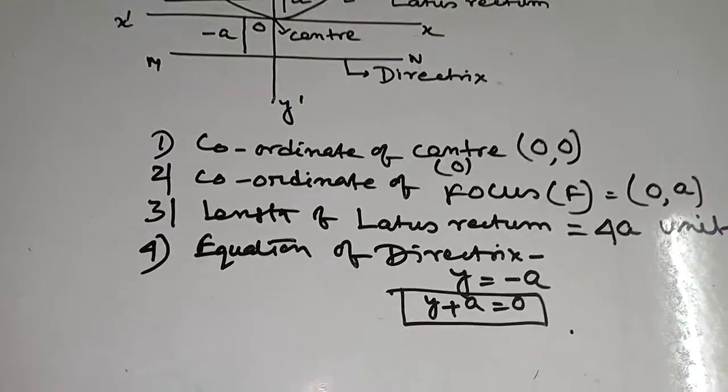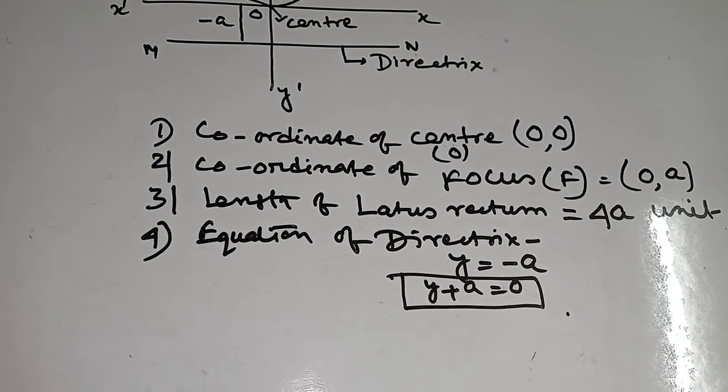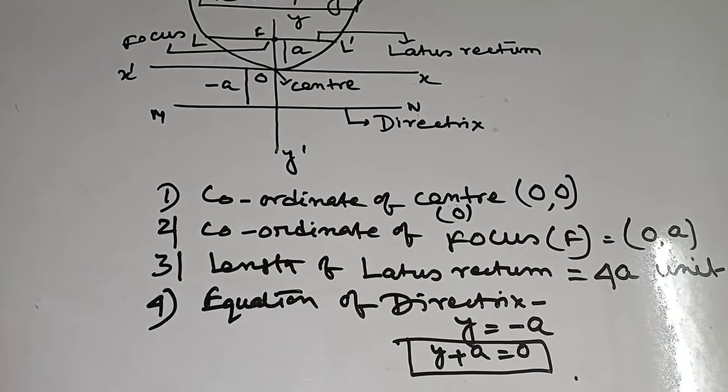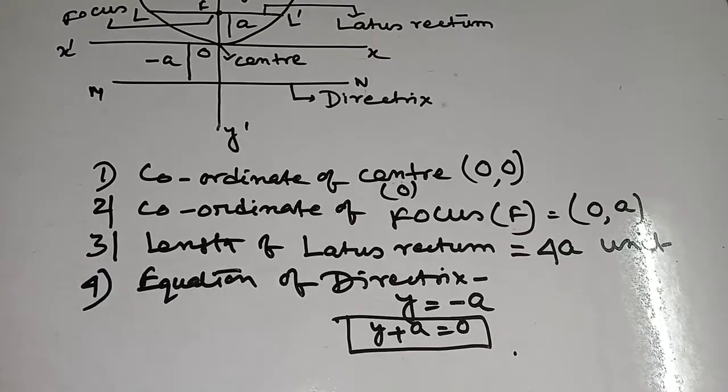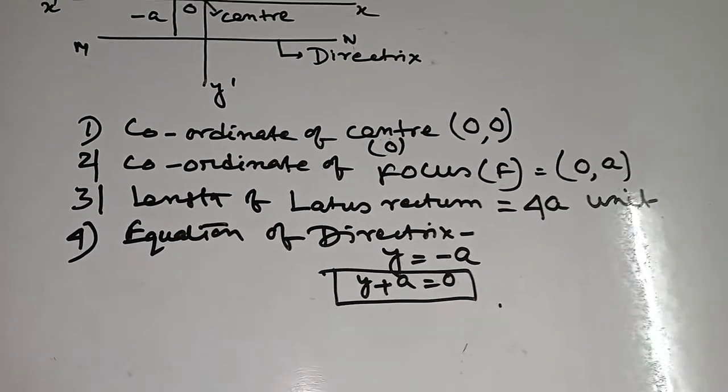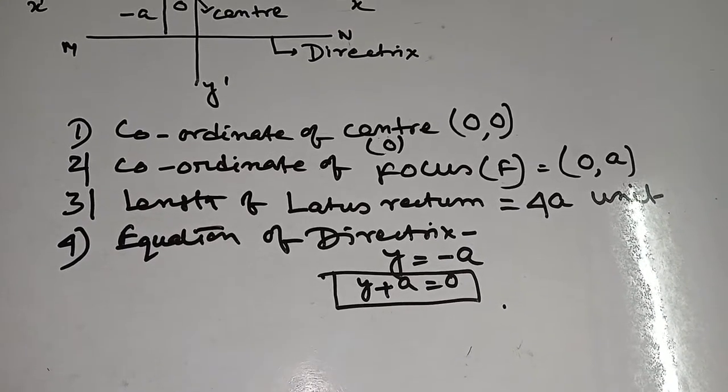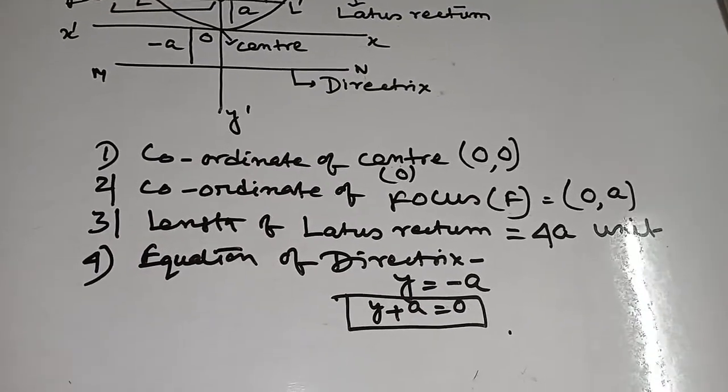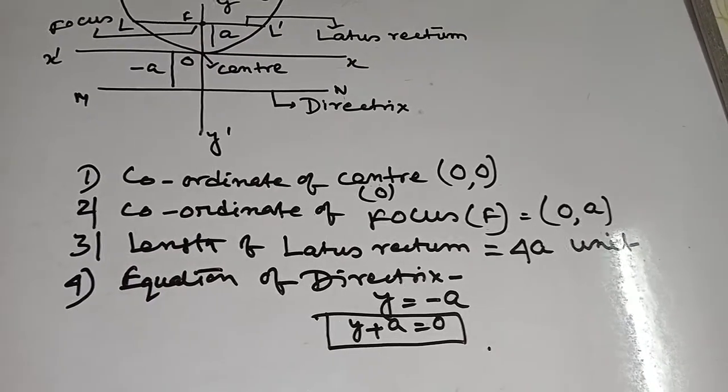That means coordinate of center is equal to 0, 0 because the center passes through the origin. Coordinate of focus 0 comma A because this parabola lies on y axis, hence x equal to 0, y equal to A, that means 0 comma A.